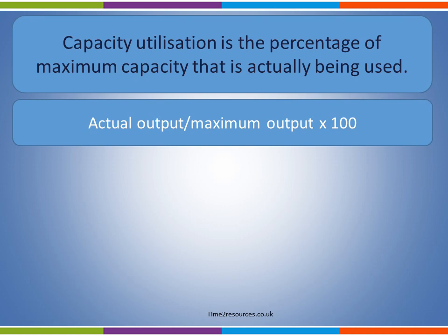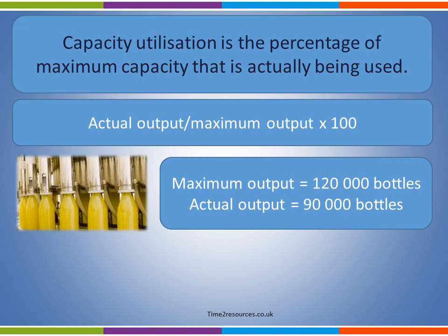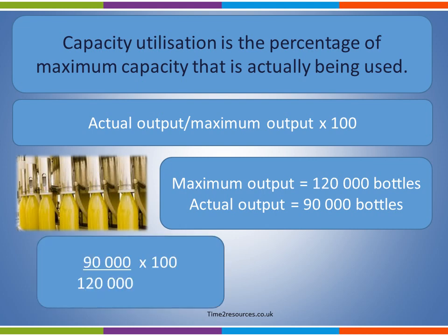Let's look at an example. Our example is a manufacturer that makes apple juice. The maximum output if all resources are fully utilised is 120,000 bottles. At the current time, the actual output is 90,000 bottles. To calculate capacity utilisation, we take 90,000, divide it by 120,000, and multiply by 100. This gives us an answer of 75%.